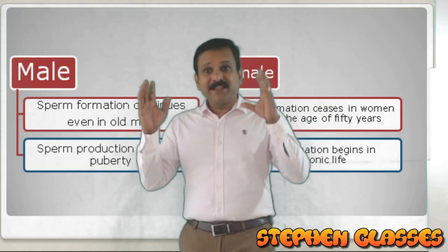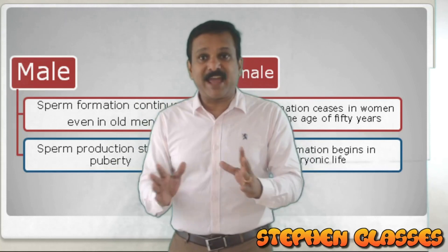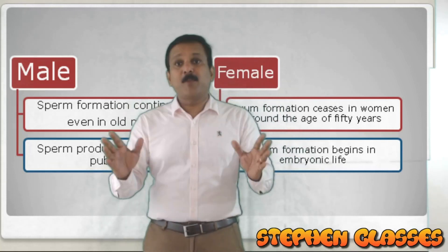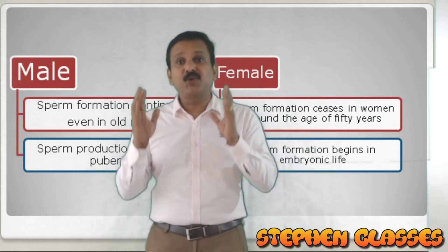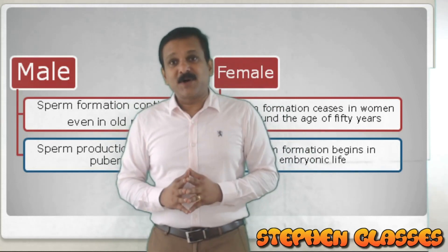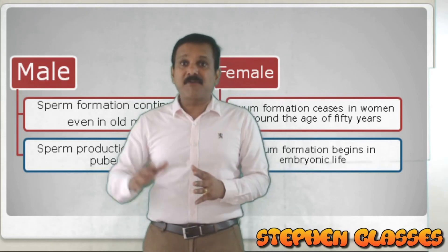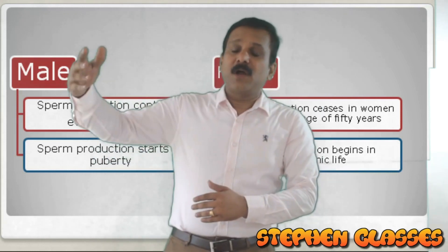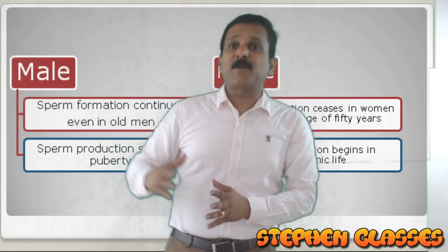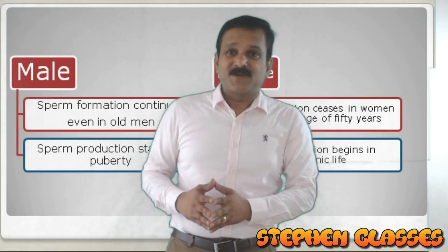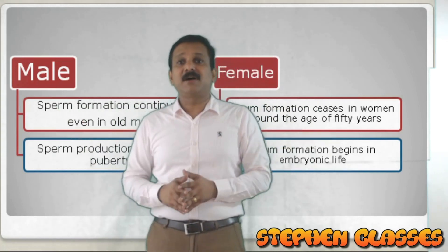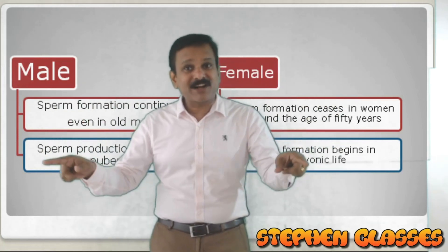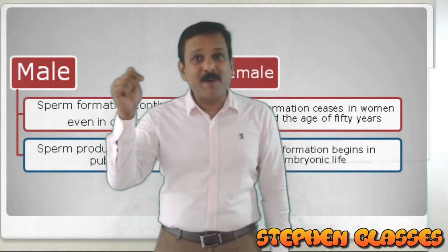In this class, I tried to explain about the reproductive events of human individuals. In the next class onwards, we will have discussion of the male reproductive system and then the female reproductive system, along with their different functions. This was only an introduction to our first chapter. We will be back with more lessons and more classes. Until then, it's goodbye from Stephen Classes.